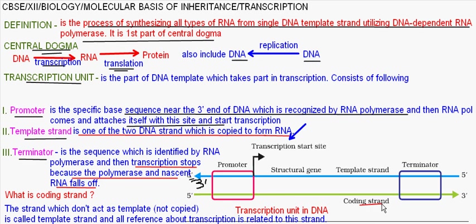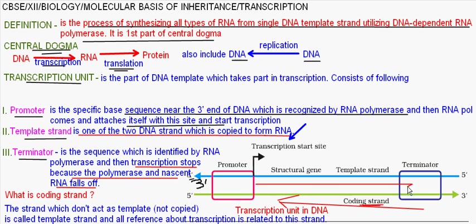The coding strand is the non-template strand. It is the strand which does not act as template for the synthesis of RNA. All references related to transcription are given about this strand. Interestingly, if you just change the location of the terminator and promoter to the opposite positions, then the template strand and coding strand will just be opposite to each other.